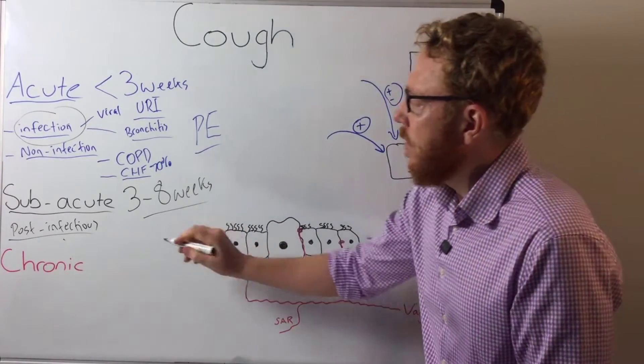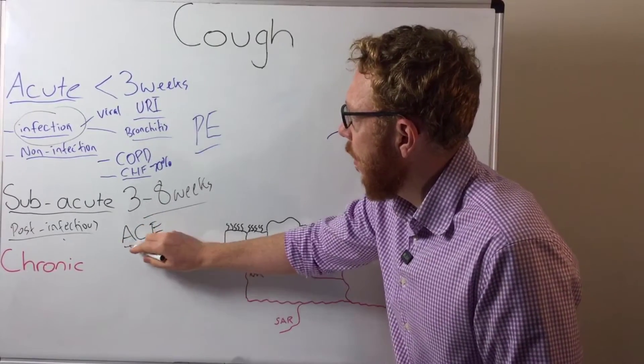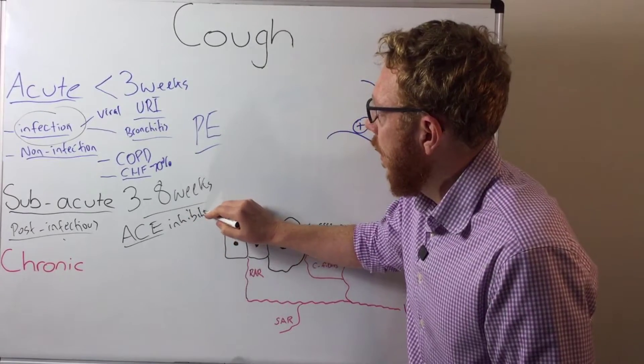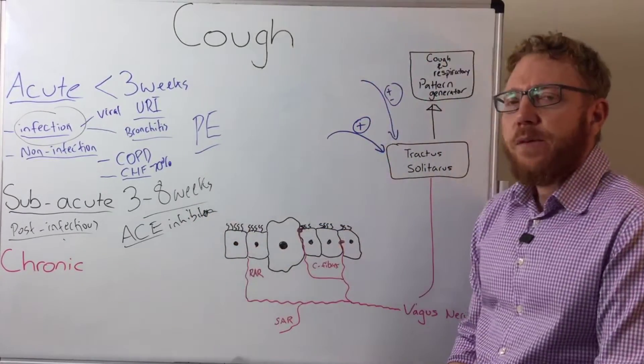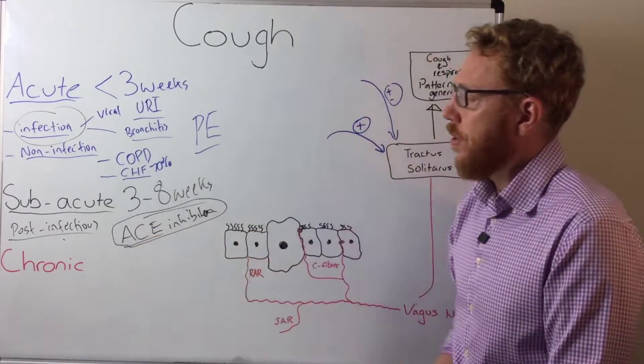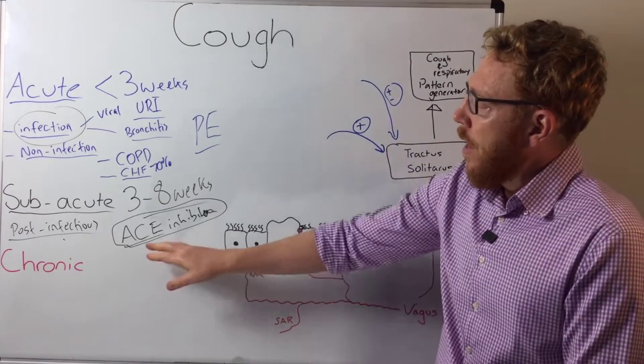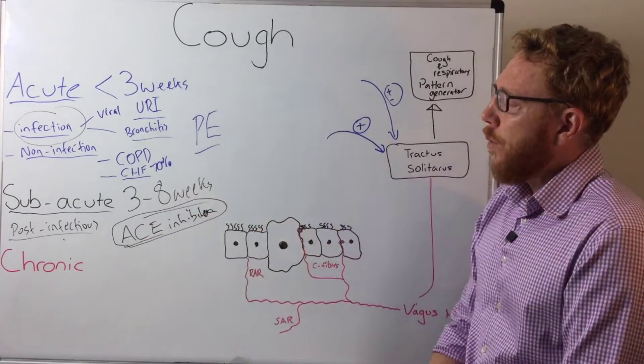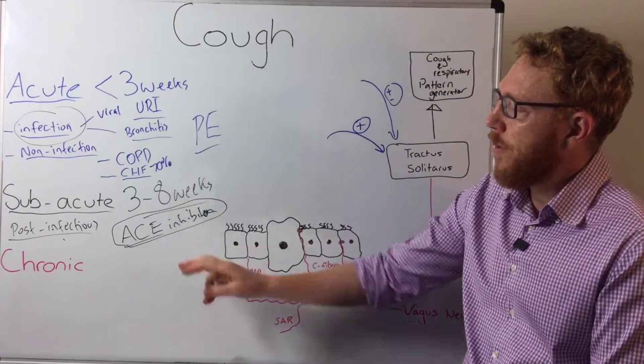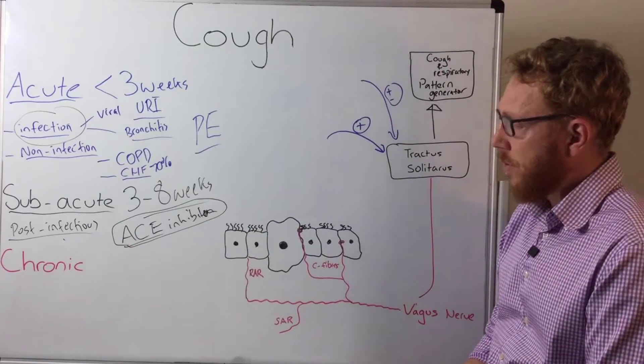Some other things just to be aware of is the use of ACE inhibitors. So an ACE inhibitor which is a blood pressure medication like the prils, these could kick in after a few weeks after you've taken it and then you might get a cough. And that might linger on for a number of weeks which may come into the subacute category. So ACE inhibitors just be aware of but again by far post-infections are the most common.